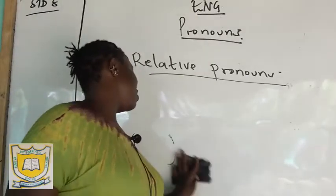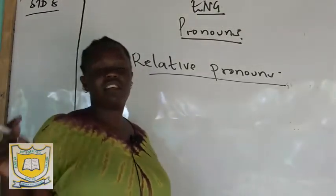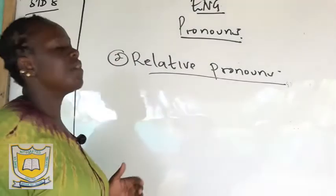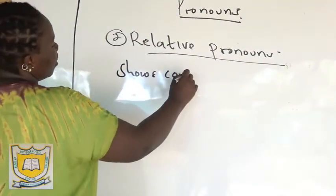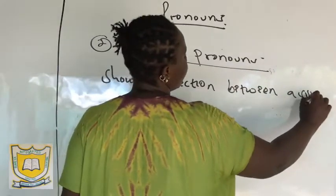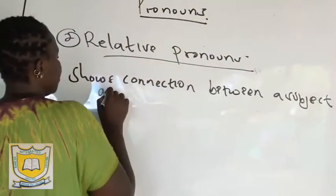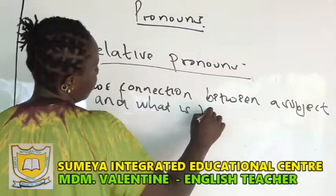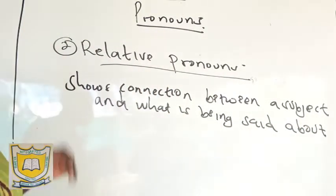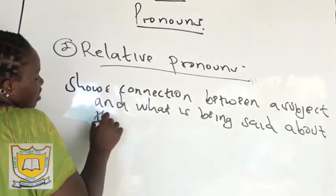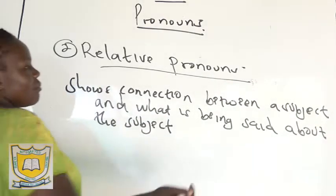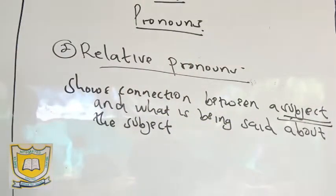Today we are going to learn how to use different relative pronouns in a sentence. A relative pronoun shows the connection between a subject and what is being said about the subject in a sentence. We've talked about subjects and objects — the subject is the doer of the action and the object is the receiver.